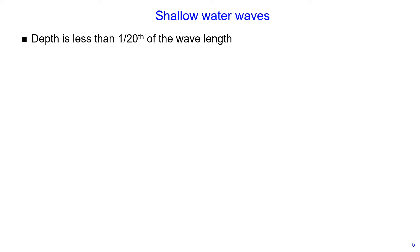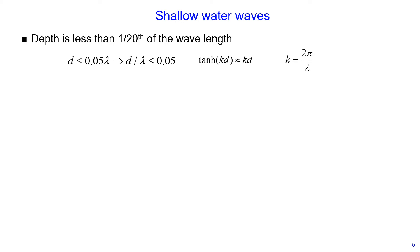Now let's consider shallow water waves. Shallow water waves are defined when the water depth is less than one-twentieth of the wavelength. This can be written as water depth less than or equal to 0.05 multiplied by wavelength, or equivalently the ratio of water depth divided by wavelength is less than or equal to 0.05. Therefore, the hyperbolic tangent of the product of wave number and water depth is approximately equal to the product of wave number multiplied by water depth.